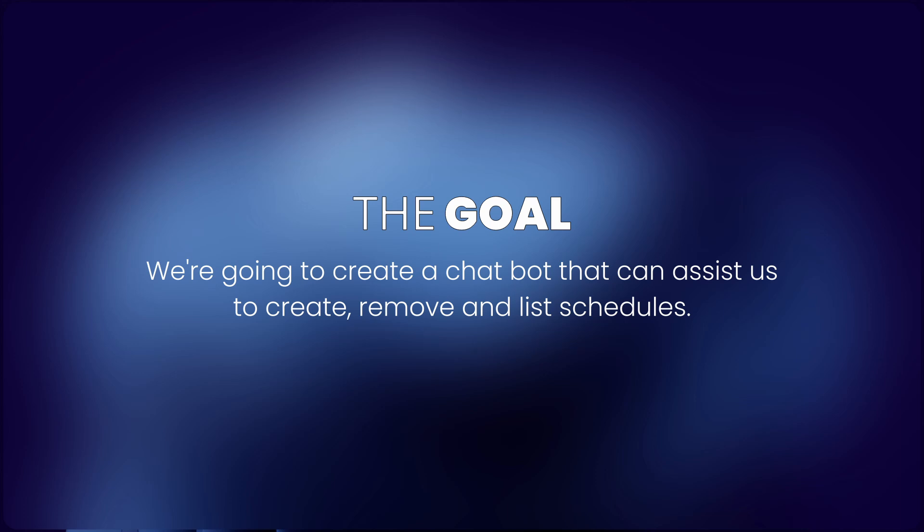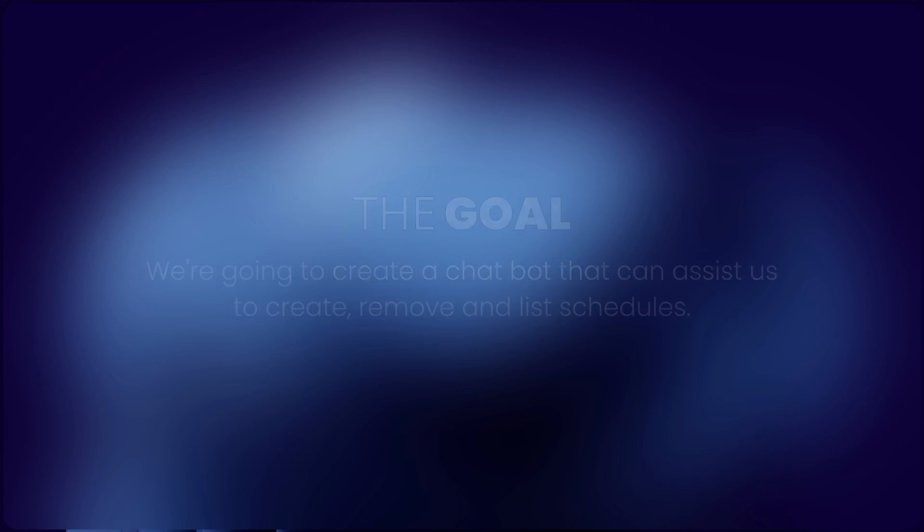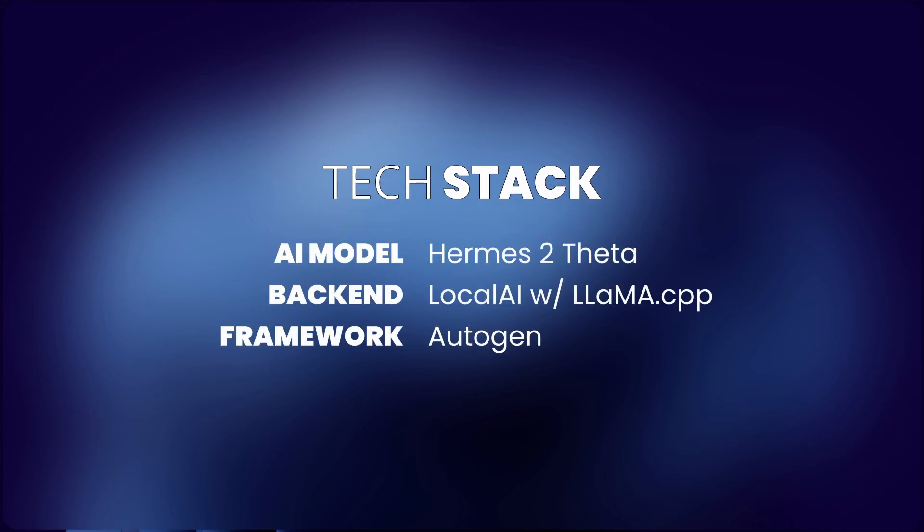If you haven't seen it, you can find the link in the video description. The tech stack we'll be using in this experiment is similar to our last experiment. We'll be using local AI with llama.cpp as the back-end, an AI model called Hermes 2 Theta, and Autogen for our AI framework. Since we're going to create a chatbot again, we'll still be using the Disqus app as the base of our module. The structure is similar to the last experiment, so I won't explain it again here. Please watch the video for the last experiment for more information — the link is in the video description.